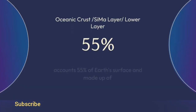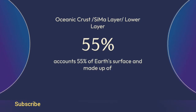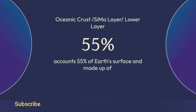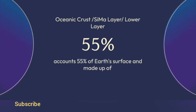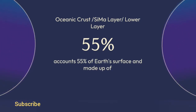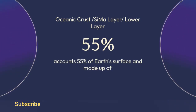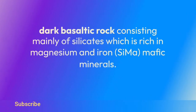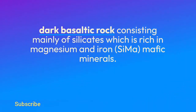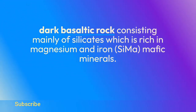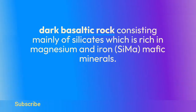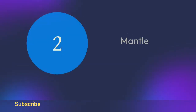Oceanic crust, also called the SIMA layer or lower layer, accounts for 55% of Earth's surface and is made up of dark basaltic rock consisting mainly of silicates rich in magnesium and iron — SIMA, mafic minerals.